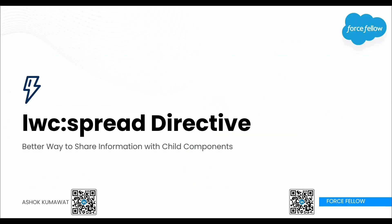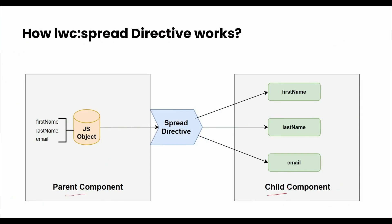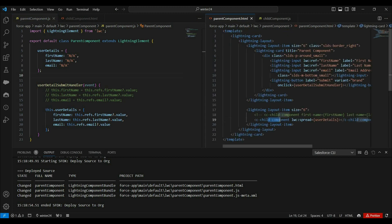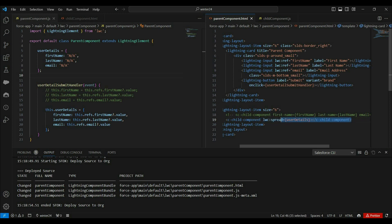You might be thinking how it is working or what this spread directive is doing internally — let's understand with a diagram. We have two components, parent and child. In the parent component, we have wrapped properties into a JavaScript object and passed that object to the spread directive. At runtime, this directive will iterate over each property available in the object and add them as attributes on the child component HTML markup. So technically this is doing the same thing, but using this directive we can avoid adding lots of attributes and our HTML will look cleaner and shorter.